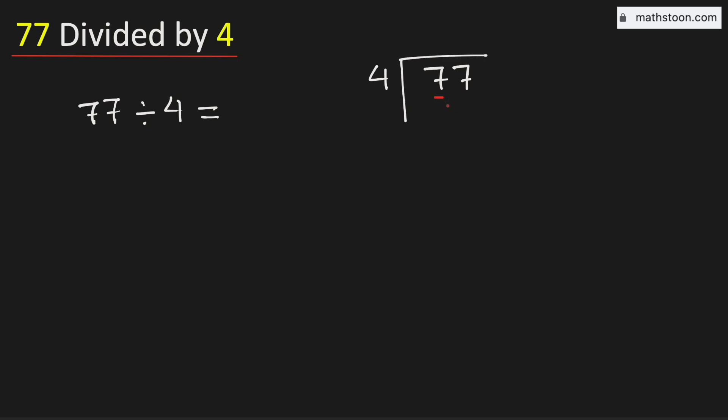Consider the first digit 7. We know that 4 times 1 is 4. Subtract, we get 3.